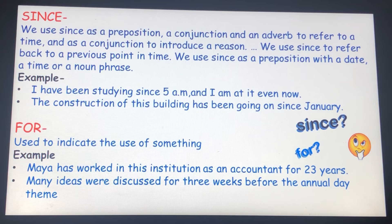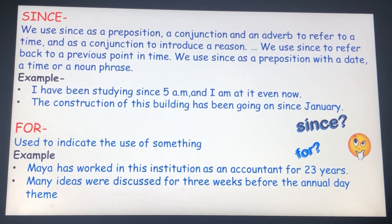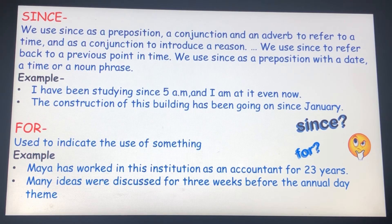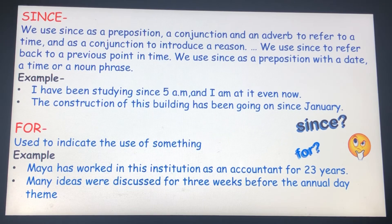For — it refers to the duration of time. Example: Maya has worked in this institution as an accountant for 23 years. 'For' is used to show a particular time happening. Many ideas were discussed for 3 weeks before the annual day theme. 'For' is also used to show a reason.